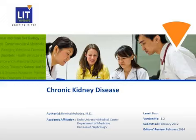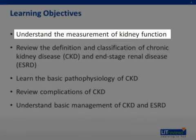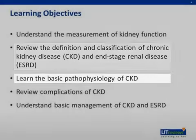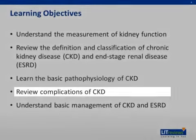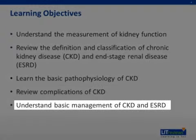This chapter focuses on chronic kidney disease. The learning objectives are as follows: to understand the measurement of kidney function, to review the definition and classification of chronic kidney disease, or CKD, and end-stage renal disease, or ESRD, to learn the basic pathophysiology of CKD, to review the complications of CKD, and to understand basic management of CKD and ESRD.